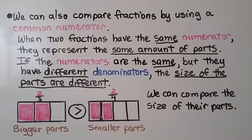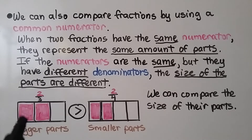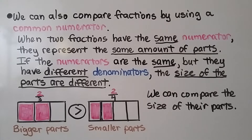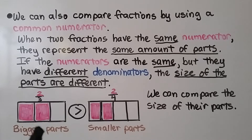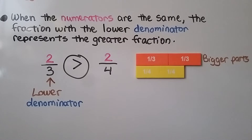We can also compare fractions by using a common numerator. When two fractions have the same numerator, they represent the same amount of parts. This is two-thirds — two parts are shaded. This is two-fourths — two parts are shaded. But if the numerators are the same and they have different denominators, this has a three and this has a four, so the size of the parts are different. This is two of three parts; this is two of four parts. This has bigger parts because there's only three of them. This has smaller parts because there's four of them. When the numerators are the same, the fraction with the lower denominator represents the greater fraction.